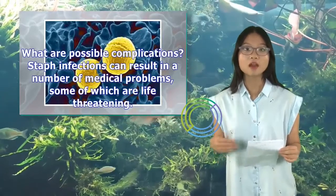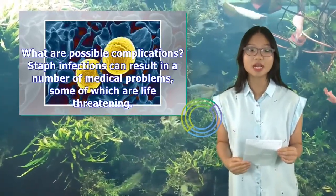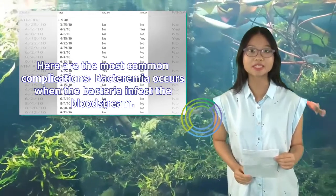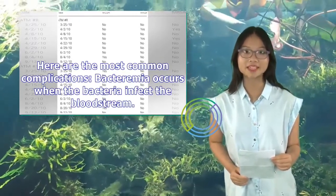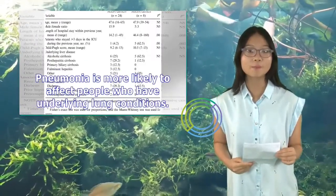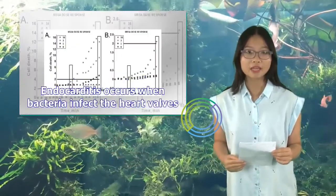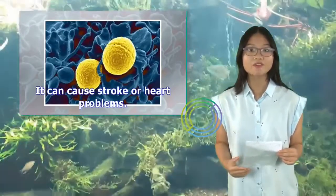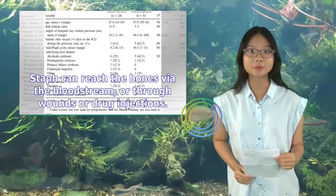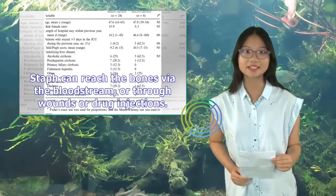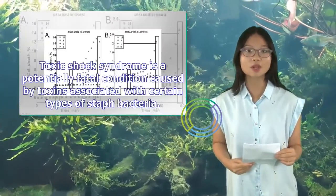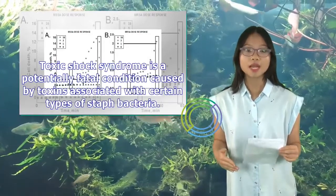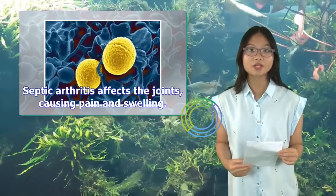What are possible complications? Staph infections can result in a number of medical problems, some of which are life-threatening. Here are the most common complications. Bacteremia occurs when the bacteria infect the bloodstream. Pneumonia is more likely to affect people who have underlying lung conditions. Endocarditis occurs when bacteria infect the heart valves and can cause stroke or heart problems. Osteomyelitis occurs when staph infects the bones, which can happen via the bloodstream or through wounds or drug injections. Toxic shock syndrome is a potentially fatal condition caused by toxins associated with certain types of staph bacteria. Septic arthritis affects the joints, causing pain and swelling.